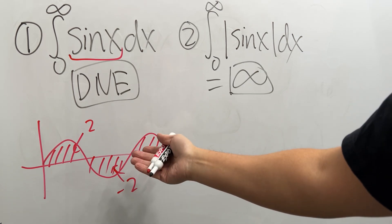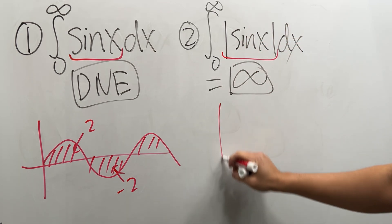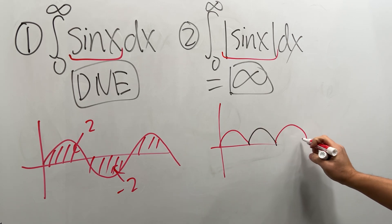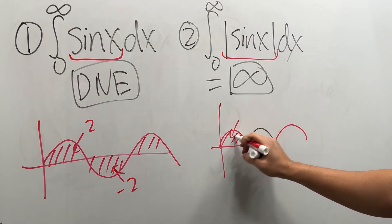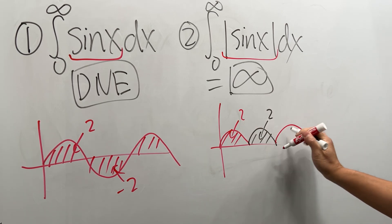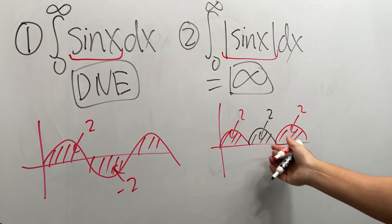And then for this one, what if you have absolute value of sine x? Well you just keep the negative part out so you have this right here and then this right here and then this right here. And in fact you have infinitely many twos because now this is positive as well. So you will just have infinity when you add them up. That's it.